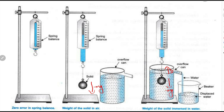In general, we can state that when an object is immersed partially or completely in a fluid, the buoyancy experienced by it will be equal to the weight of the fluid displaced by it. According to the second part of Archimedes principle, the volume of water displaced by the object is equal to the volume of the object. I believe the concept of Archimedes principle is now clear.